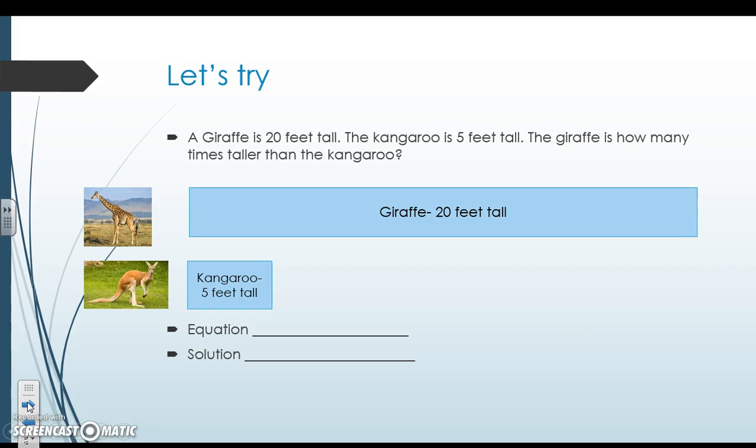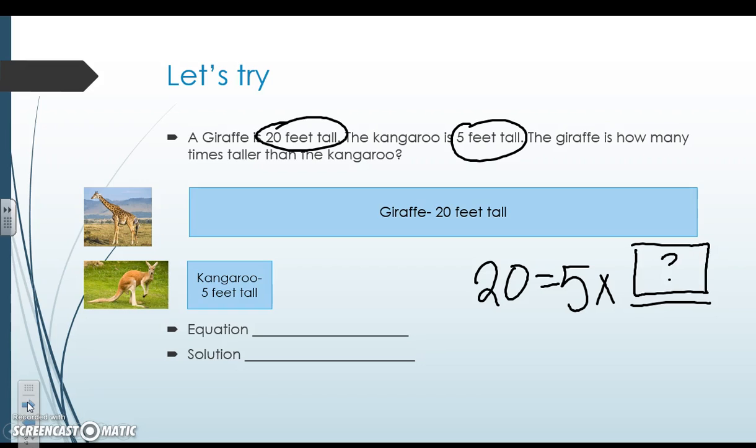So let's try an example. Here we have a giraffe and it's 20 feet tall. A kangaroo is five feet tall. The giraffe is how many times taller than the kangaroo? Well, we know that the giraffe is 20 feet tall. So we have 20 feet is equal to five feet times something. Right? So that's our comparison. We're comparing the height of the giraffe and the height of the kangaroo.